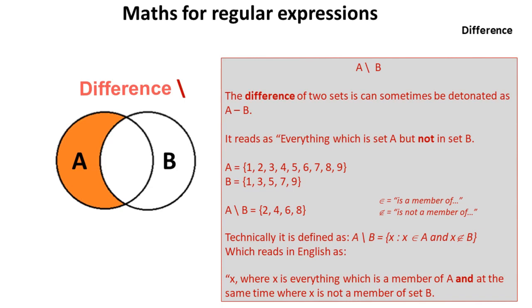And finally, difference. So with difference, we look at the two sets, and we can sometimes think of this as a form of subtraction, which is why it's sometimes written as A minus B.